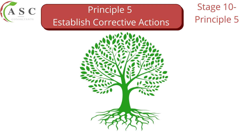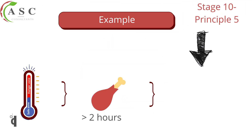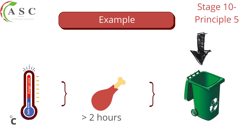Many tools are used for root cause analysis, but the most popular are the fishbone diagram and the five whys. You must get to the fundamental cause of the problem to prevent reoccurrence. For example, if you were cooking food and it did not reach the required temperature, you would either recook the product or dispose of it depending on your company processes. Then you conduct an investigation to determine why the process failed — why it did not reach the required temperature.